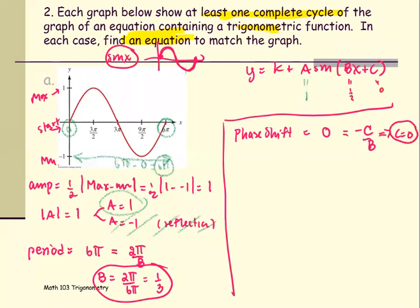The next one is k. k is the vertical shift. This graph has no vertical shift. Therefore, k equals 0.